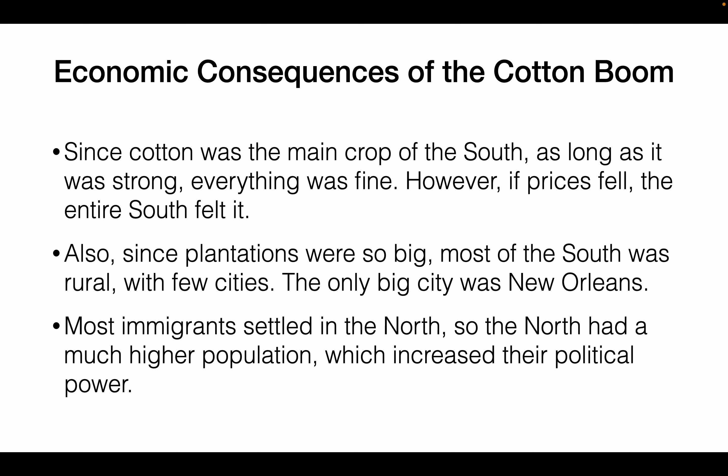A few big Southern cities included New Orleans, Charleston, South Carolina, Atlanta, Augusta, Georgia, and Savannah. Most immigrants were settling in the North because the North had a much higher population, factory jobs were available, and they were not welcome in the South. So we see far more immigrants settling in the North, not the South.